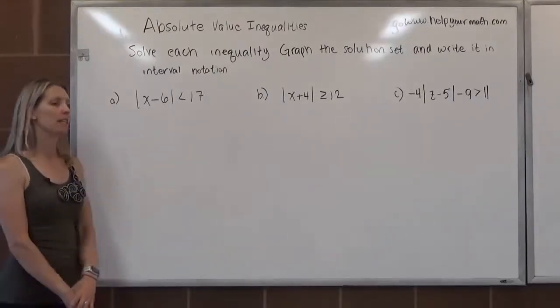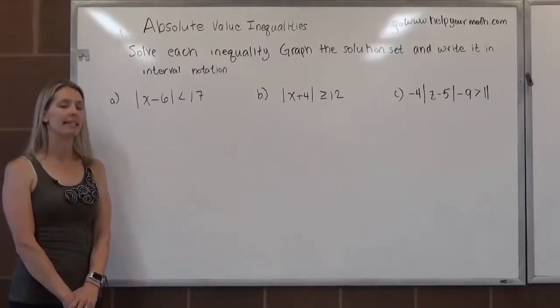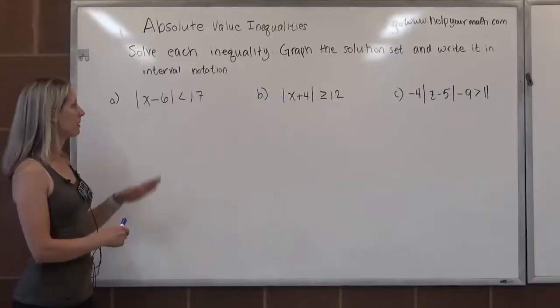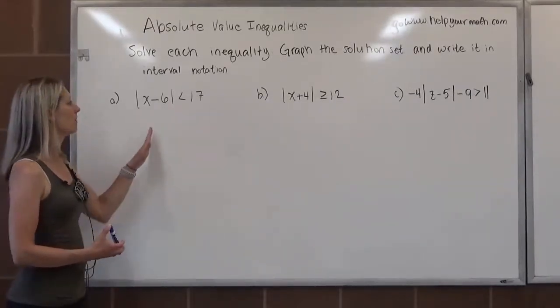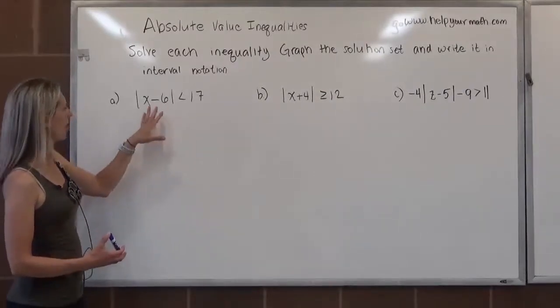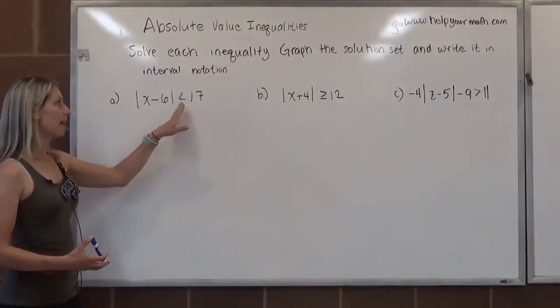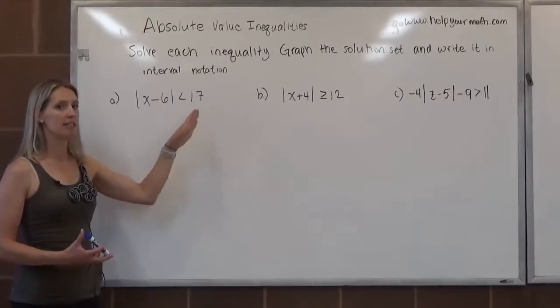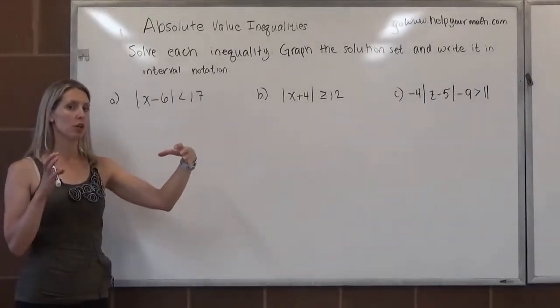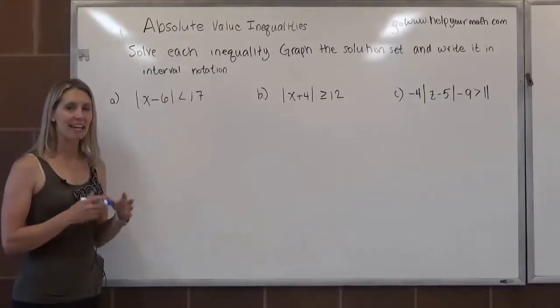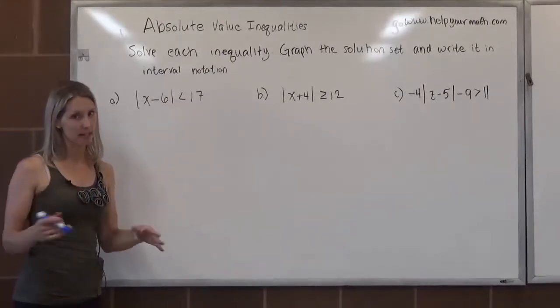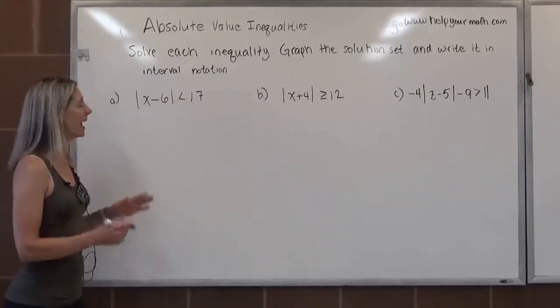Letter A, the absolute value of x minus 6 is less than 17. First, we want to make sure the absolute value is by itself on one side, which it is. Now we can consider what we have. It says the absolute value is less than 17, so it needs to be closer than 17 to 0 on a number line. When it's less than, less than is an and. That's going to be your conjunction.